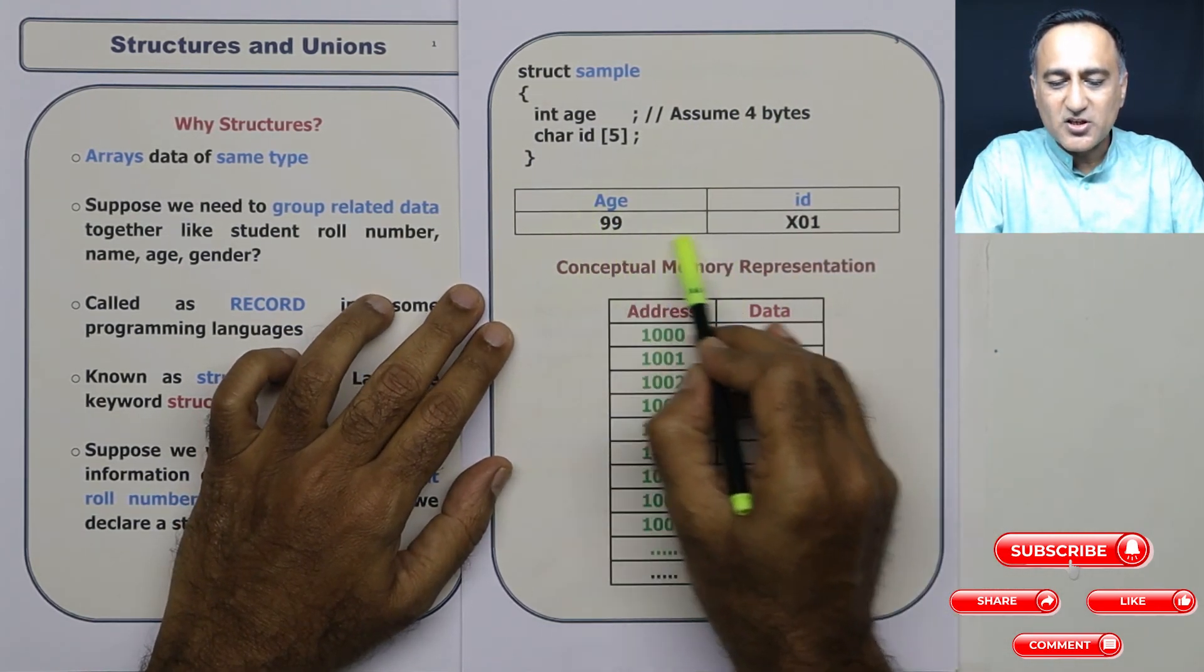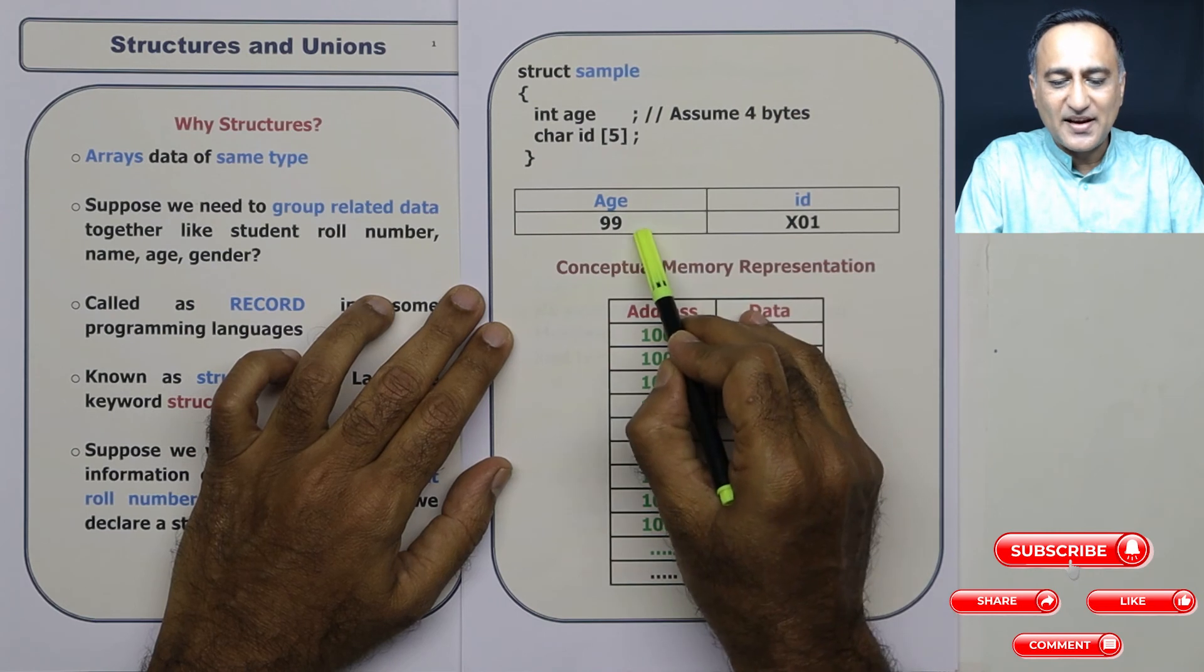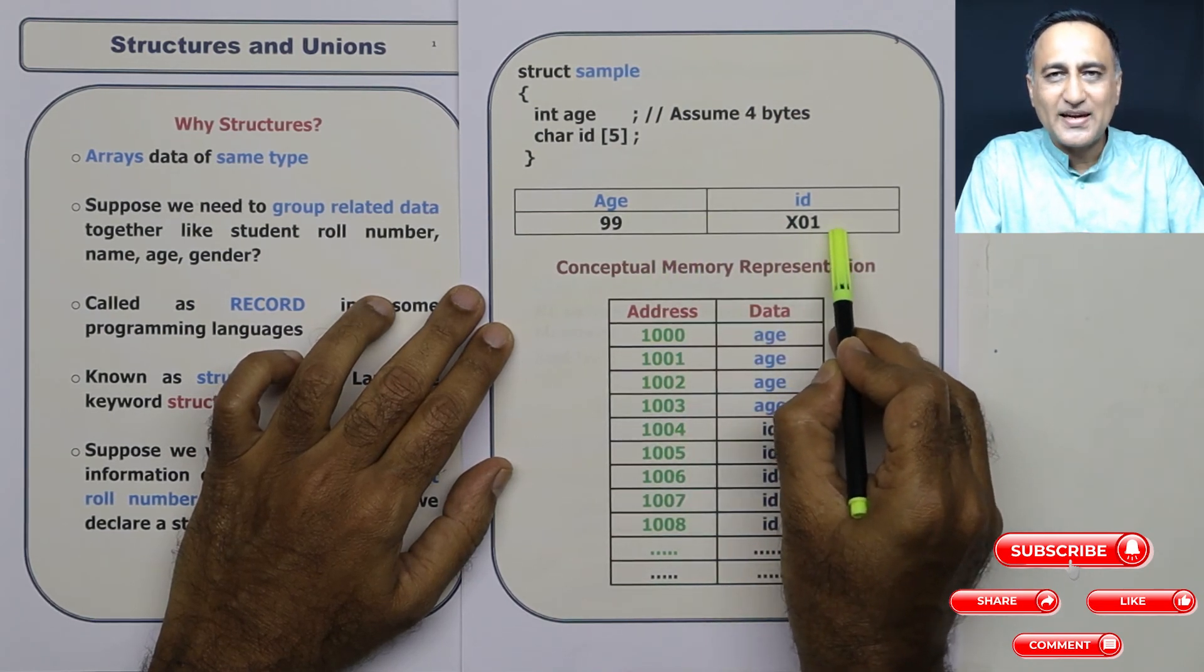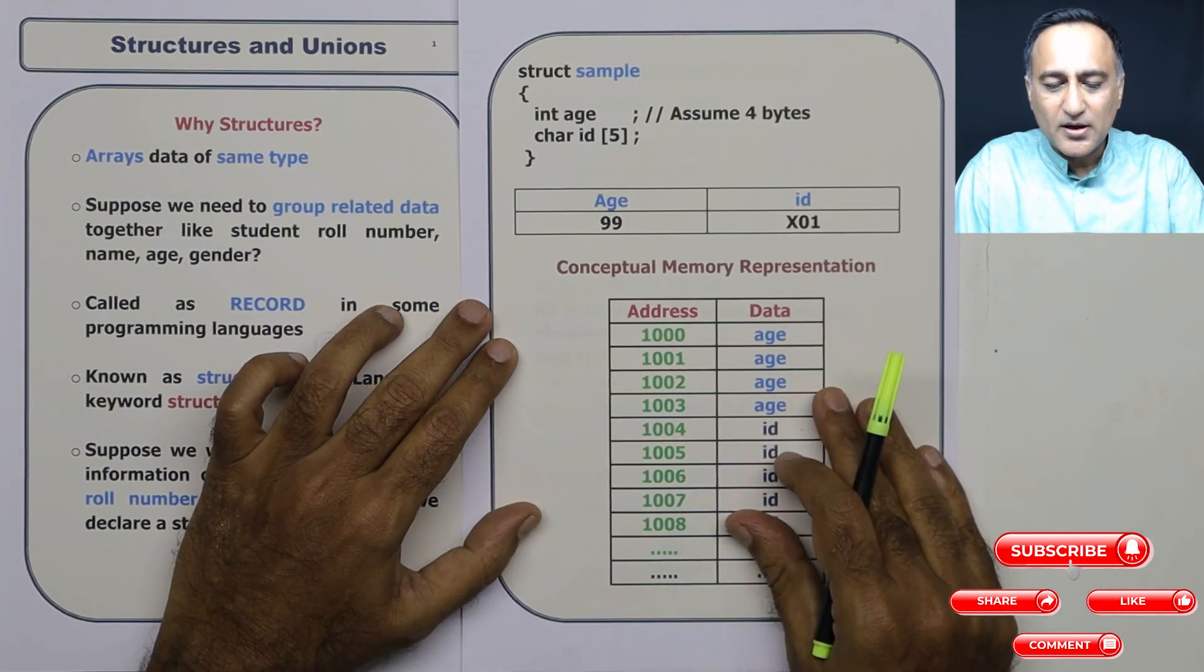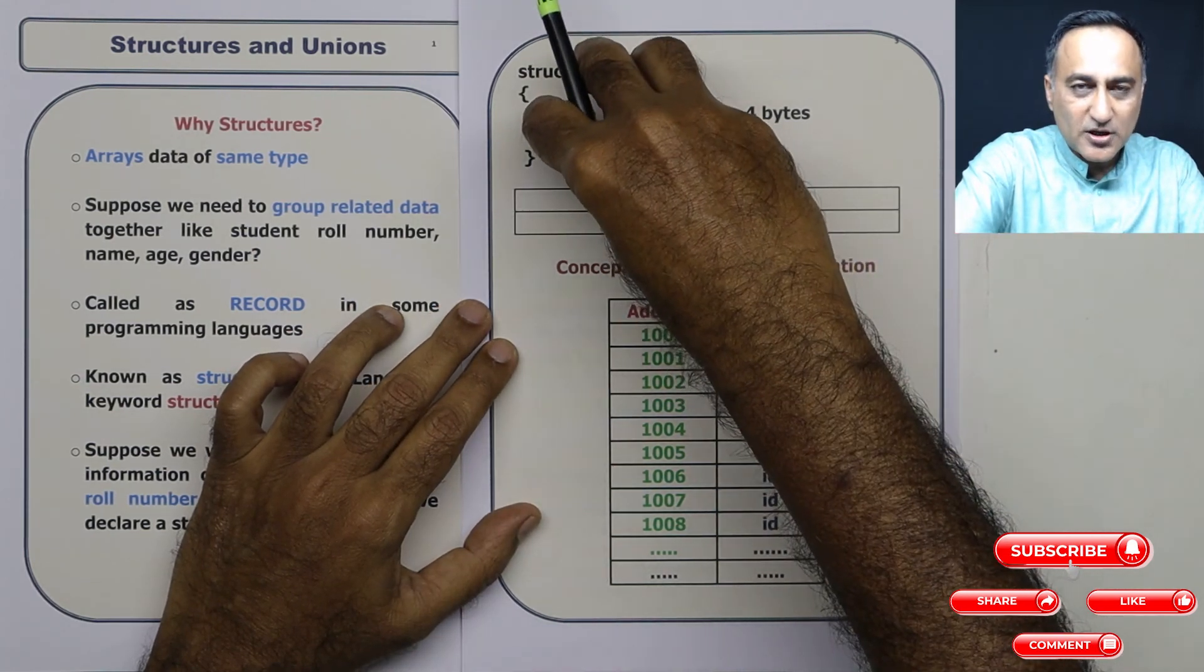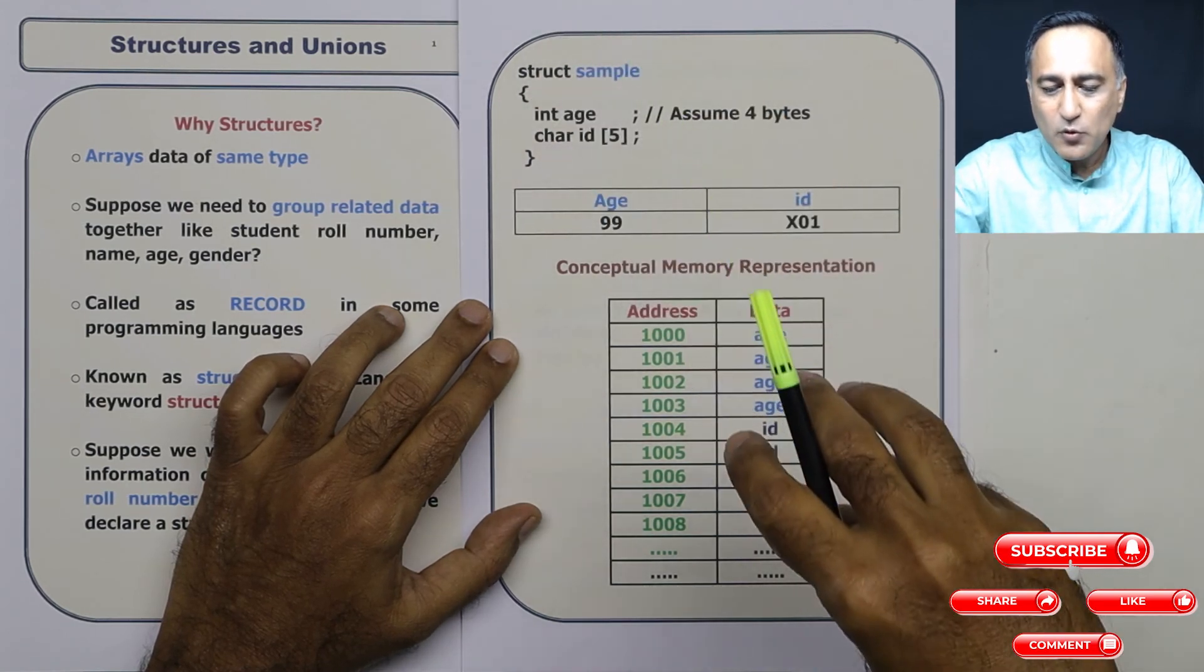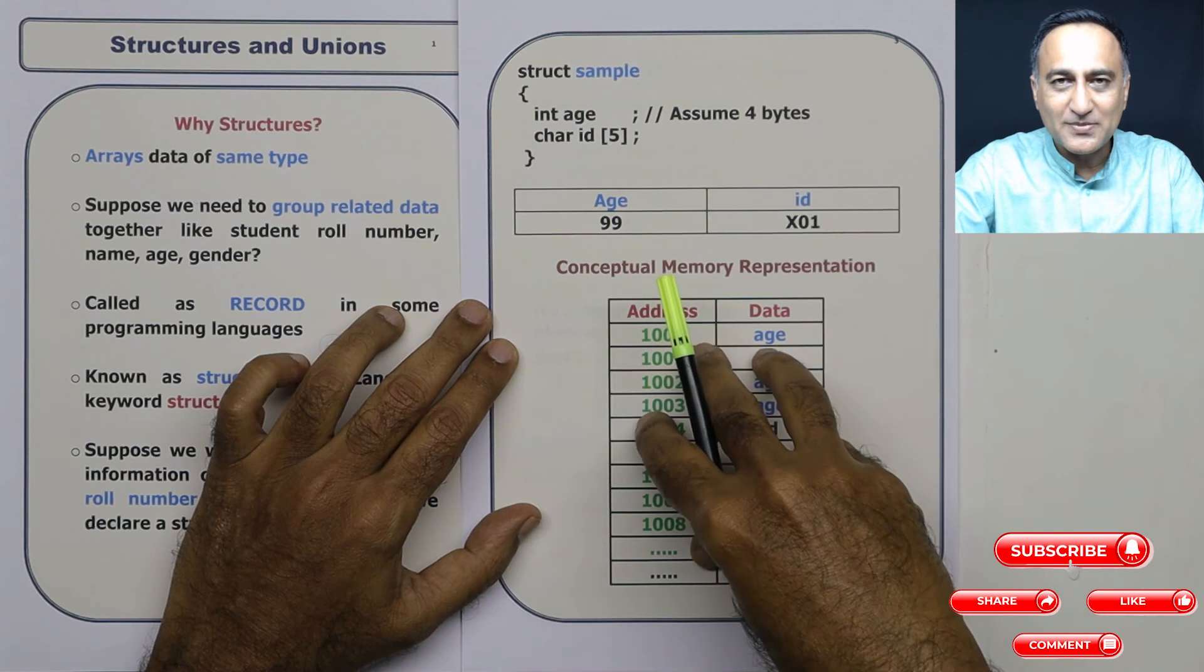So this is how your structure will look conceptually age 99. And let's say ID is x01. I have not shown the null character because that's not really important. Conceptually, this particular structure, assume I create a variable of this particular structure, I am going to have an allocation which looks something like this.